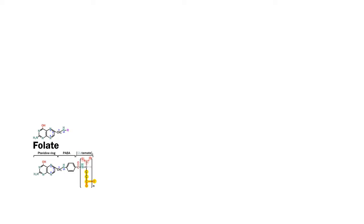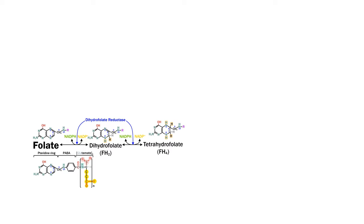You might recognize that it's similar to the coenzymes NAD+ and FAD. In the same fashion, it's possible to reduce the molecule and add hydrogens using the enzyme dihydrofolate reductase. It can then be reduced further by the same enzyme to tetrahydrofolate, which is the fully activated form of vitamin B9.